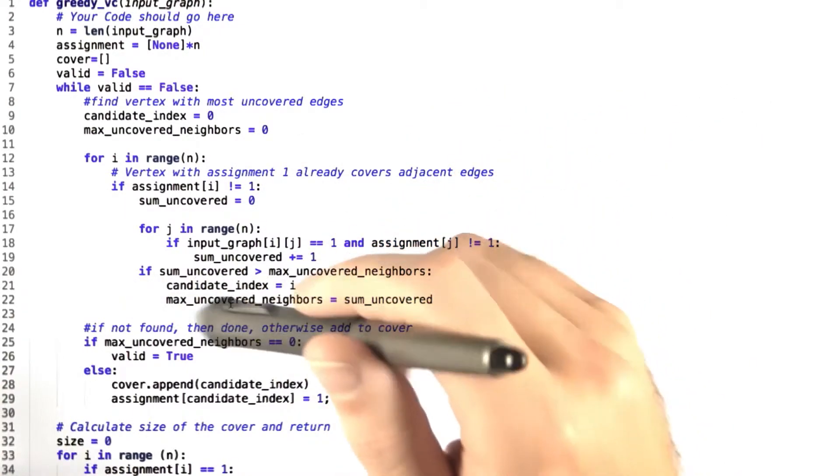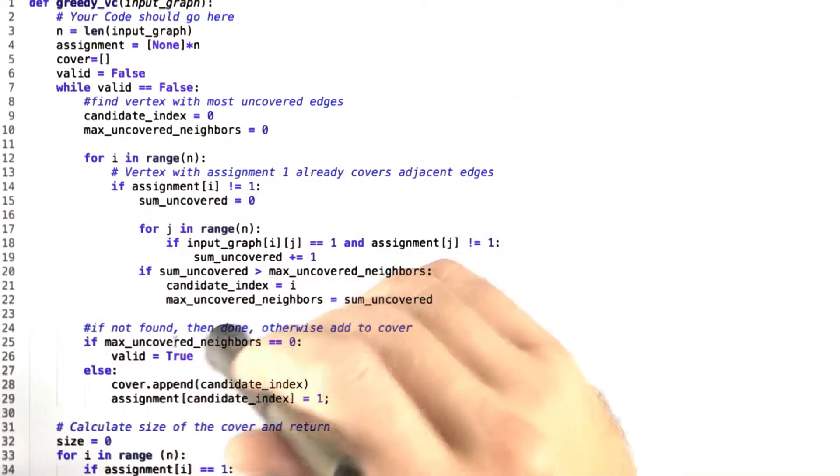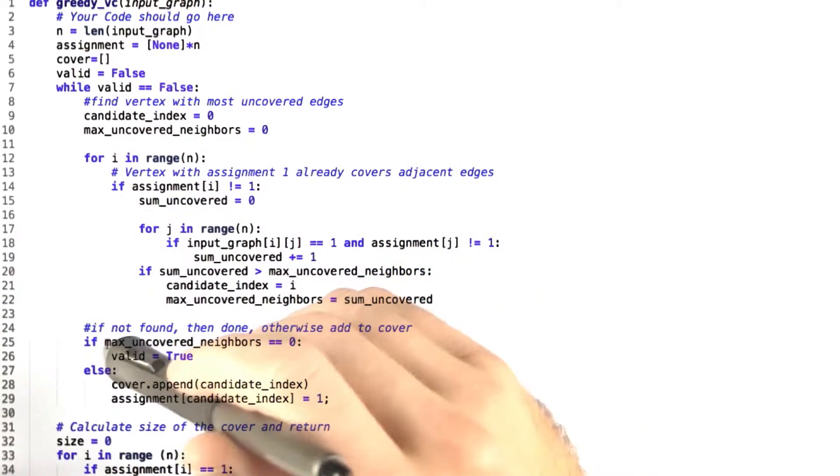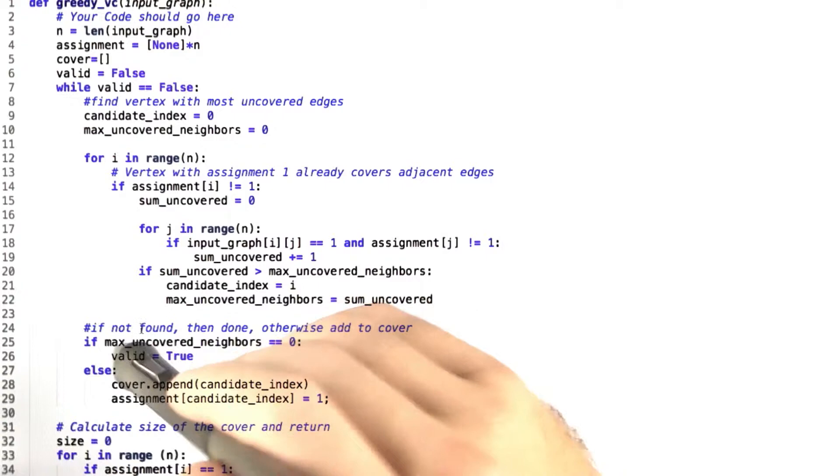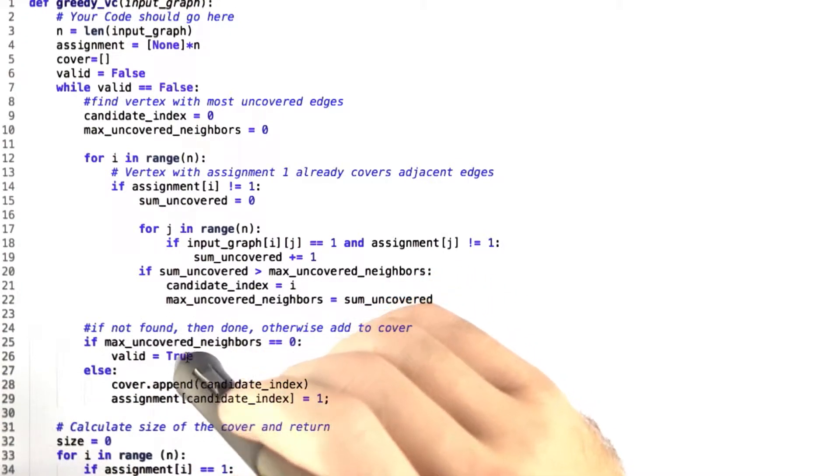So we figure out which vertex we should next add to the cover. Now, if we didn't find any uncovered neighbors, if max uncovered neighbors is 0, then we see that this is a valid vertex cover. We set valid to true and that means that we'll fall out of this while loop and continue on.